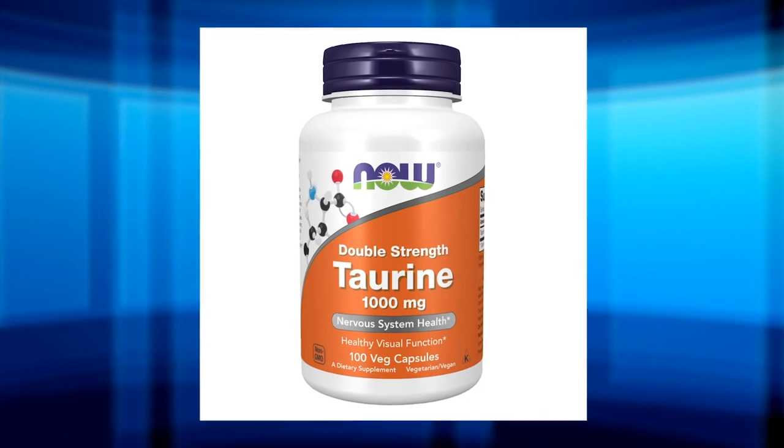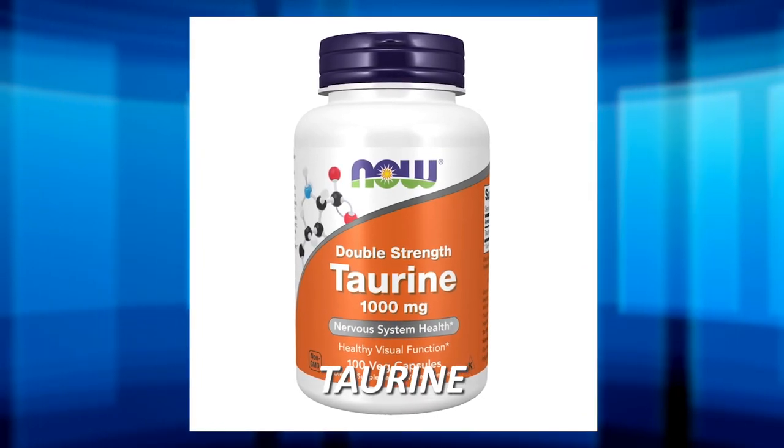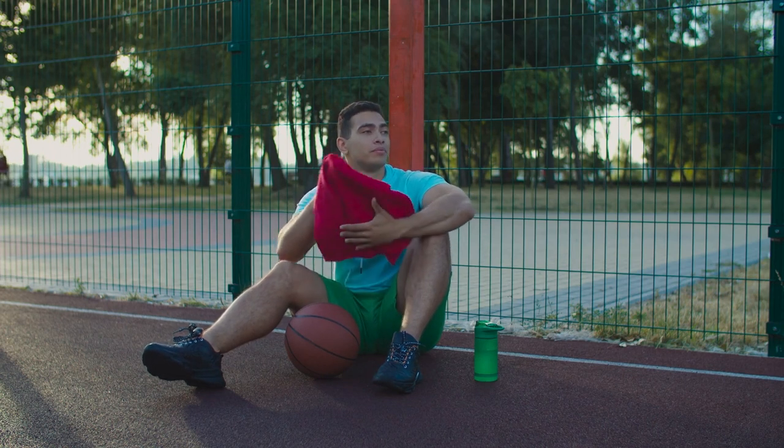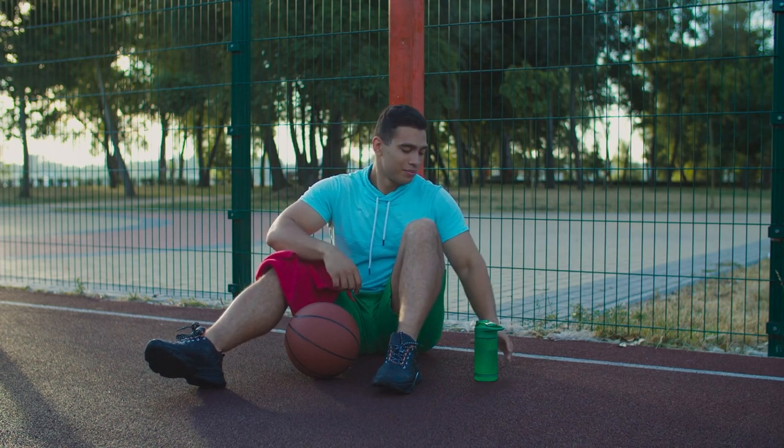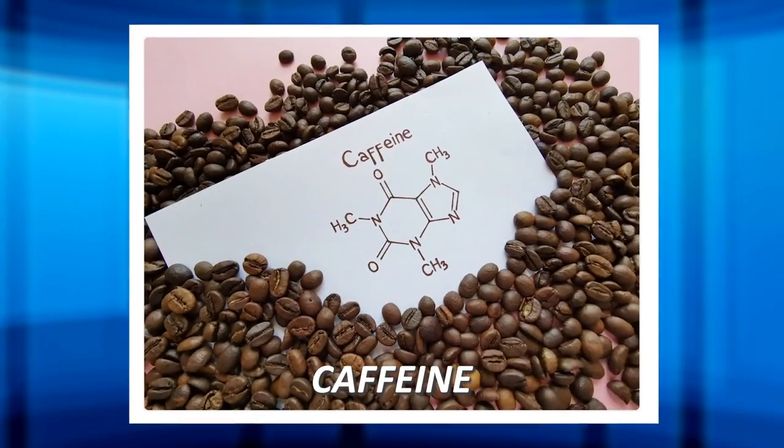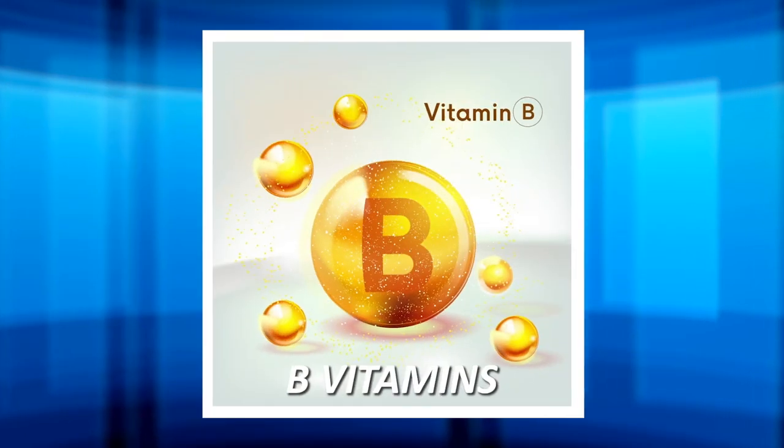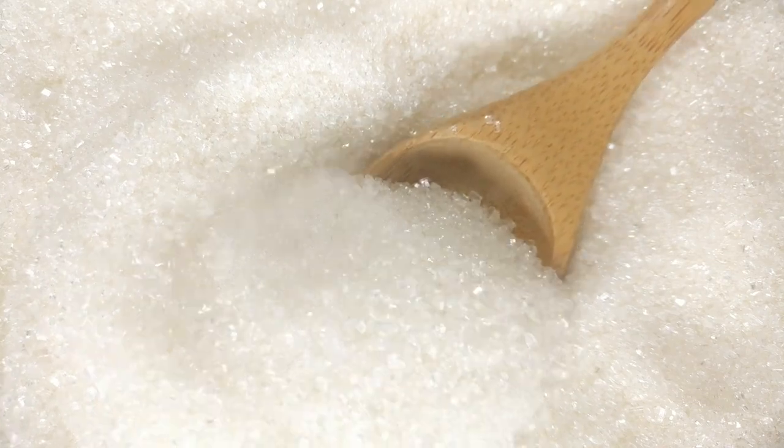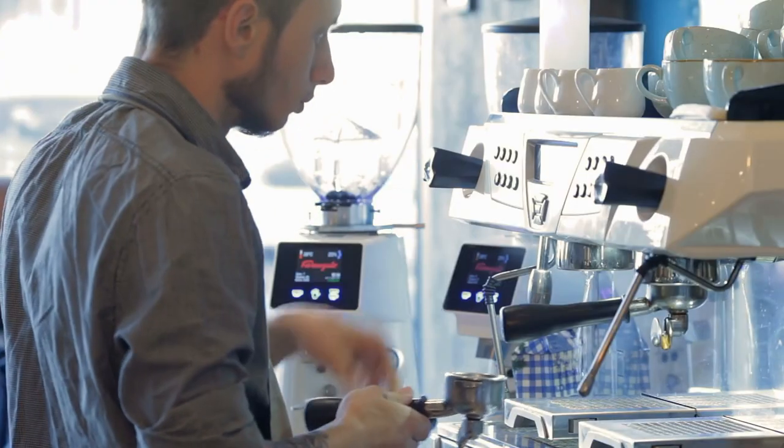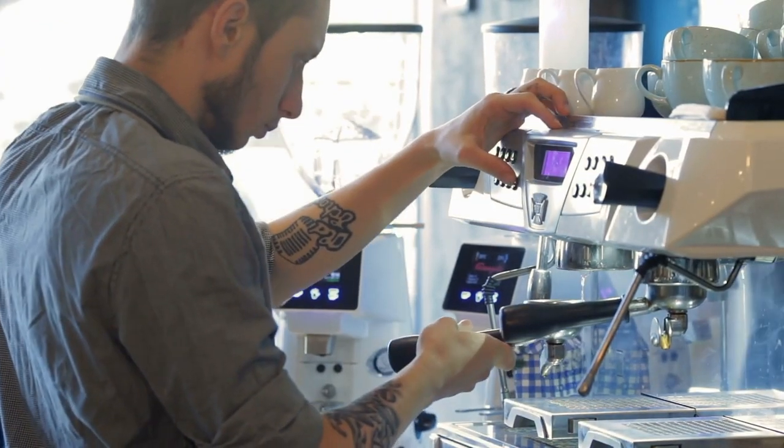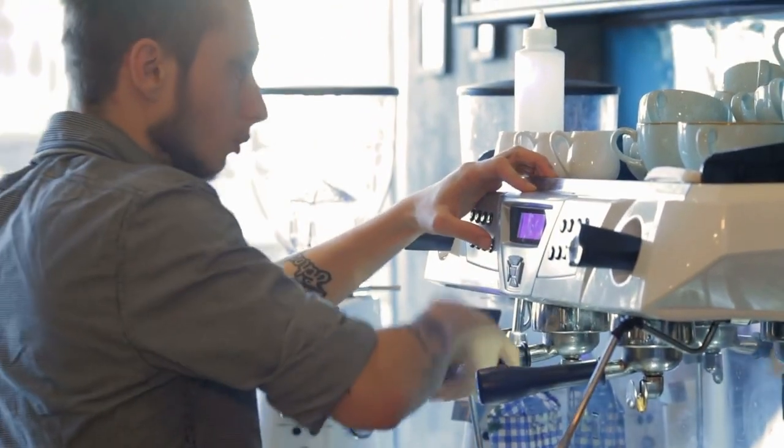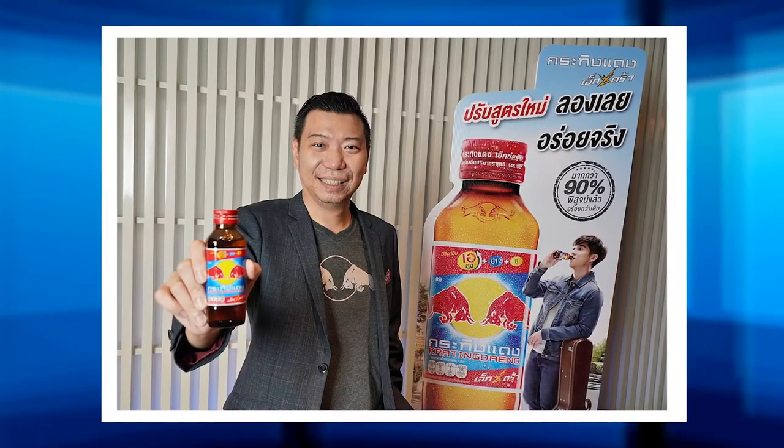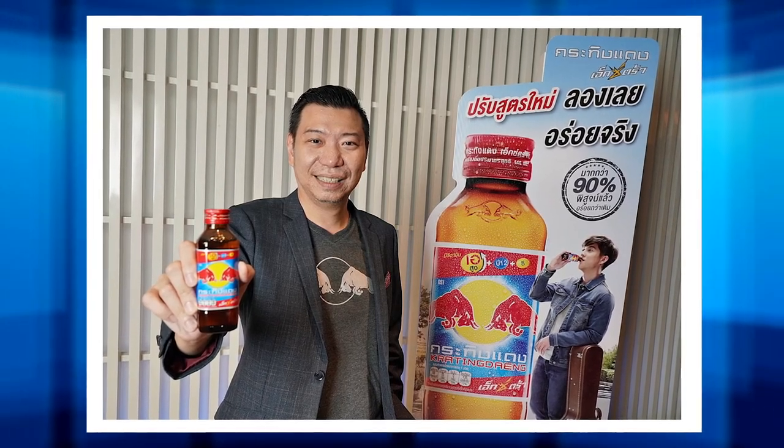He started development and chose taurine as the primary compound in his energy drink because it provides a significant performance boost, especially when someone is sleep-deprived. He also added caffeine as a stimulant, B vitamins to support cell metabolism, and two types of sugar to provide a source of energy. With the chemistry figured out, Chaleo's energy drink was ready to be introduced to the market, and he named it Krating Daeng. History was written, and the first branded Thai energy drink was born.